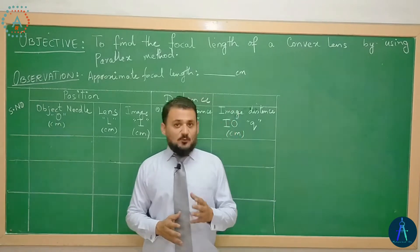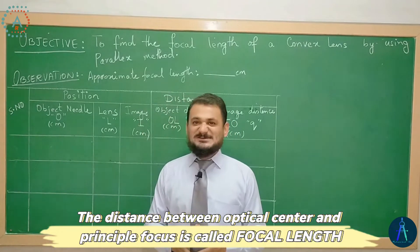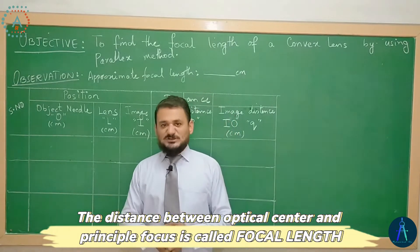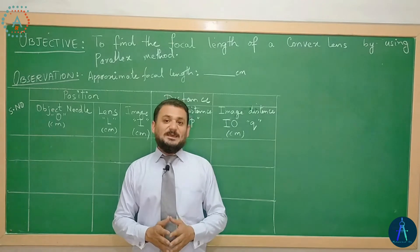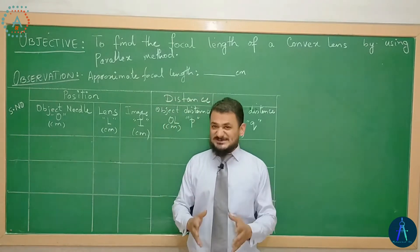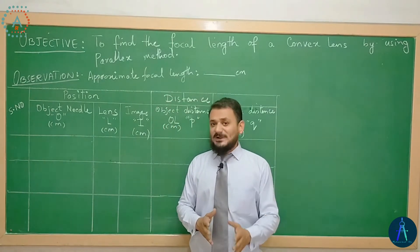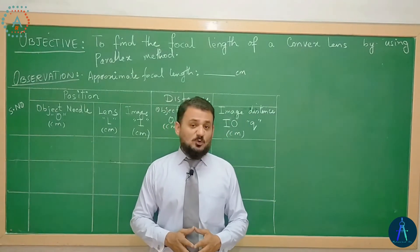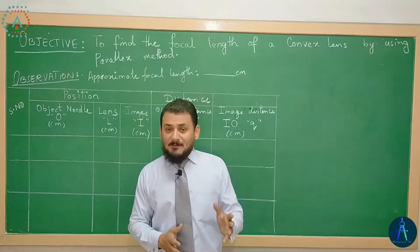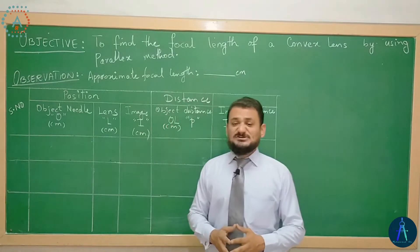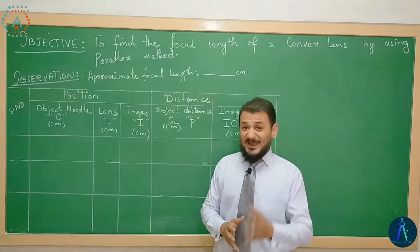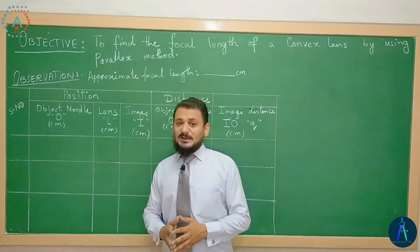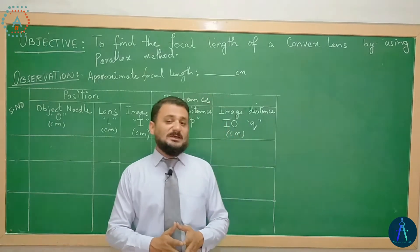Focal length ایک distance ہے lens کے اندر from optical center to the principal focus. Optical center سے لے کے principal focus تک کا جو distance ہے اسے ہم focal length کہتے ہیں۔ Principal focus وہ point ہوتا ہے principal axis کے اوپر جہاں تمام parallel incident rays lens سے refract ہونے کے بعد meet کرتے ہیں۔